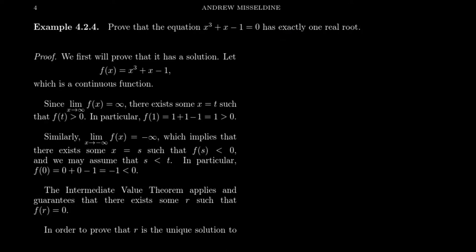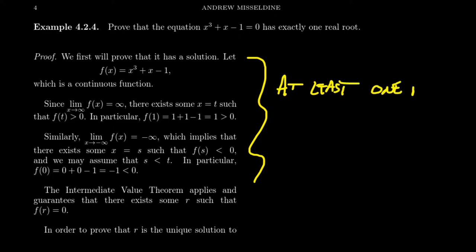Let's remind the viewer how to show it has at least one solution. We're working with an equation, but we want to turn this into a question about a function. Set one side of the equation equal to 0, which we've already done: x cubed plus x minus 1. Take that non-zero side and make it into a function: f of x equals x cubed plus x minus 1. Note that this function is continuous.